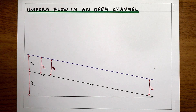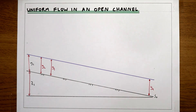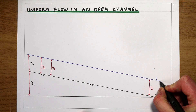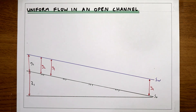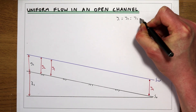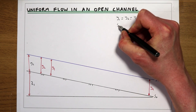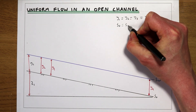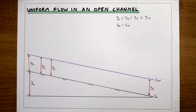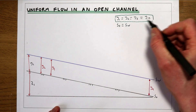So uniform flow is where we have the same flow depth all the way along the channel. That's the same as saying that the slope of the bed of the channel — S naught — is the same as the slope of the water surface. For uniform flow: Y1 equals Y2 equals Y3 equals Yn, and the bed slope of the channel equals the water surface slope. That's our basic definition of uniform flow.